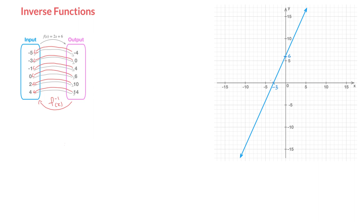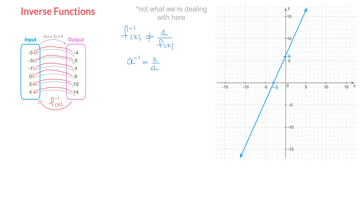How do we find this inverse function? First of all, let me point out something we don't do. Although we write the inverse function as f with an exponent of negative 1 over x, this is not equal to 1 over f(x). When looking at this notation, some of you may be thinking of the power of negative 1 as we typically come across in algebra — for instance, a to the power of negative 1, which equals 1 over a. But that's not what we're dealing with here. This exponent of negative 1 is only there to indicate that we're dealing with the inverse function, and it does not work the same way.